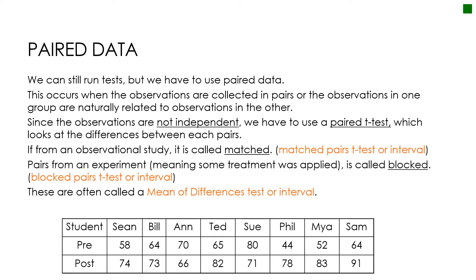That doesn't mean we can't run a test. It just means our test has to be different. If I checked conditions for a two-sample t-test and checked the independence condition, I would say this failed, and therefore I can't run a two-sample t-test. But I can run a different test. When observations are not independent — when they are paired — we have to use something called a paired t-test.